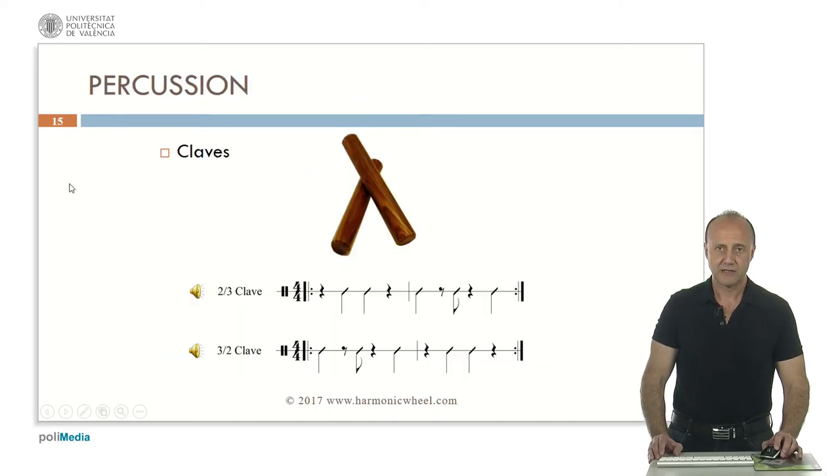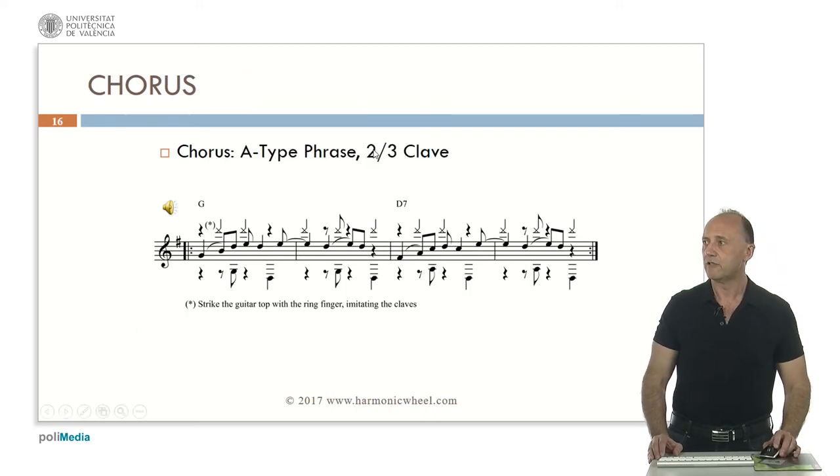Every song has an intrinsic clave rhythm even if this instrument is not present. There are two clave rhythms, the 2-3 which is this one and the clave rhythm 3-2 which is this one. In our case the clave rhythm is 2-3 and we will include it in the chorus, that is in an A type phrase.